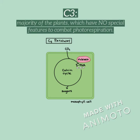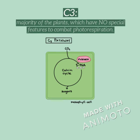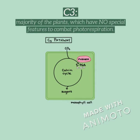This picture shows the inside of a C3 plant, which is the majority of plants and has no special features to combat photorespiration. In this plant, both CO2 and O2 are able to enter the Calvin cycle, which leads to the clogging of the leaf pores and leads to photorespiration.